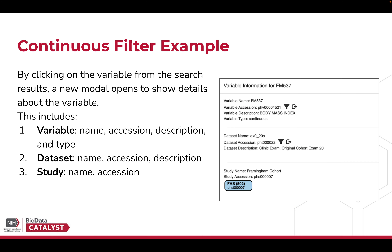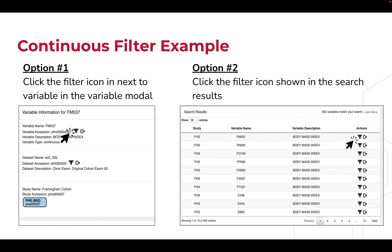By clicking on the variable, we can see information about the variable before applying a filter. When we click on the variable from the search results, a new modal opens to show the details about the variable, including variable name, session, description, and type; the dataset name, session, and description; and the study name and session.